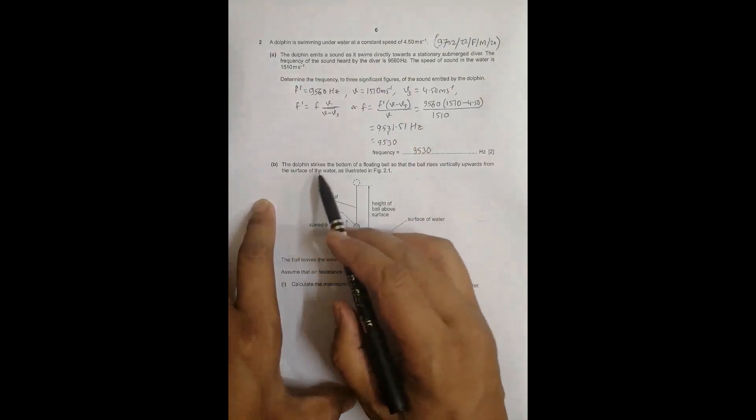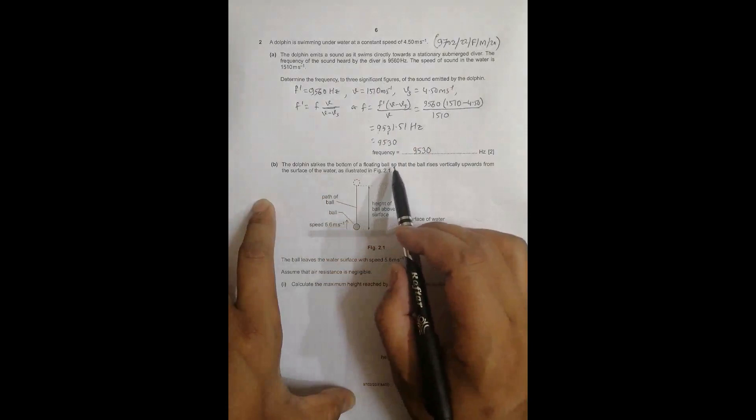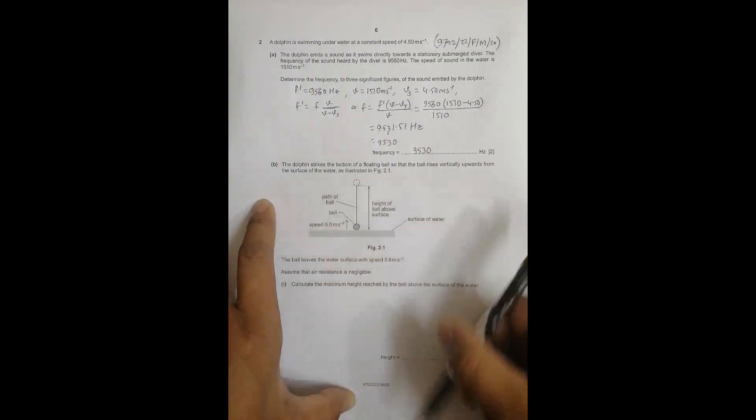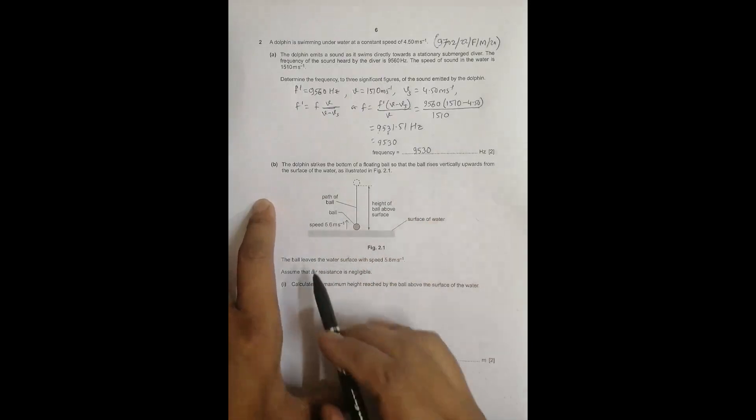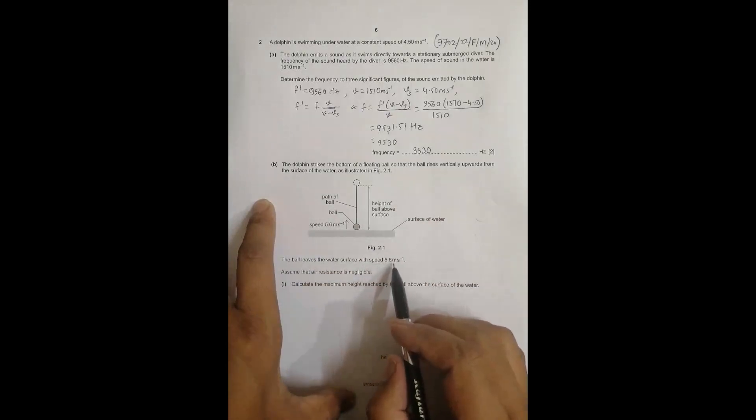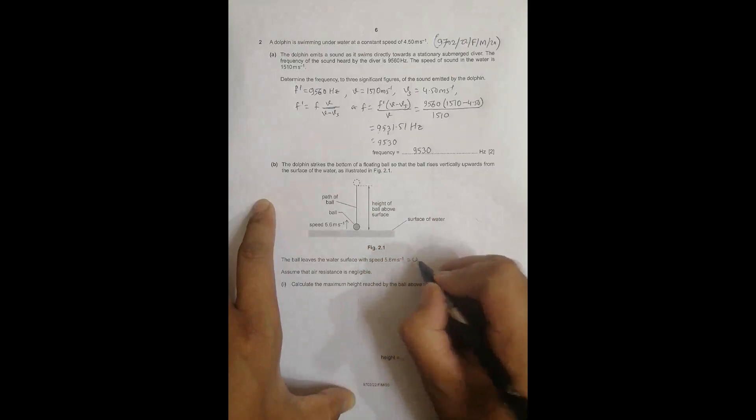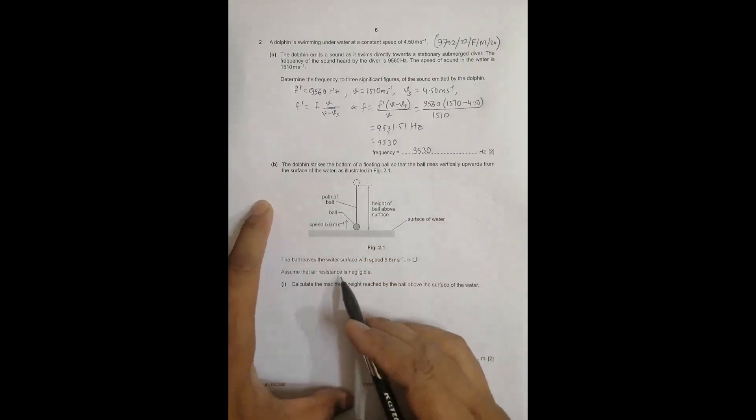The dolphin strikes the bottom of a floating ball so that the ball rises vertically upward from the surface of water. The ball leaves the water surface with velocity 5.6 meters per second, which equals U. Assume that air resistance is negligible.